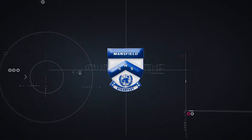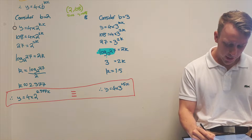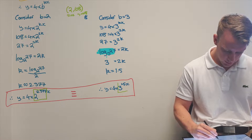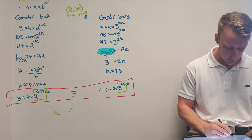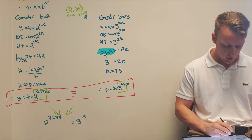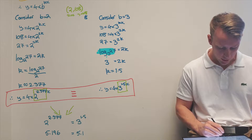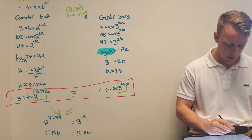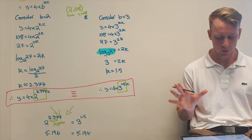What's interesting is that everything in the equations is the same except for the base-power part. When you evaluate both expressions in the calculator, you get approximately 5.196 and 5.194 respectively — they're not exactly equal because k was an approximation, which is why we're off by a small decimal.